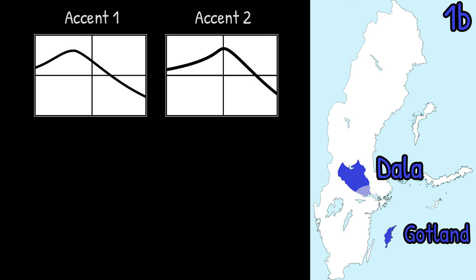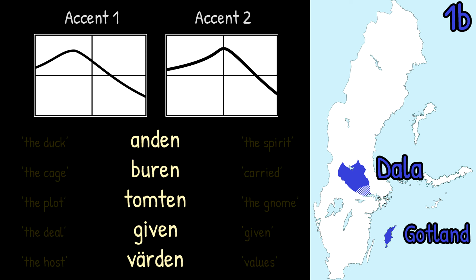Type 1b is primarily found in the regions of Dalarna and Gotland. This type also has a single pitch peak in both Accent 1 and 2, which are distinguished by timing. In contrast to type 1a, however, the pitch gets to rise in both accents, peaking on the stressed vowel in Accent 1 and just after it in Accent 2. Another minor difference is also that the pitch keeps falling after reaching the peak, whereas in type 1a the fall is eventually leveled out.